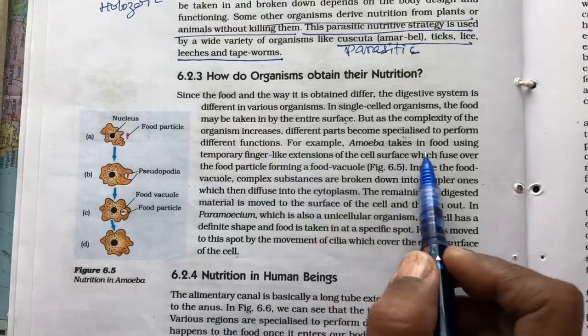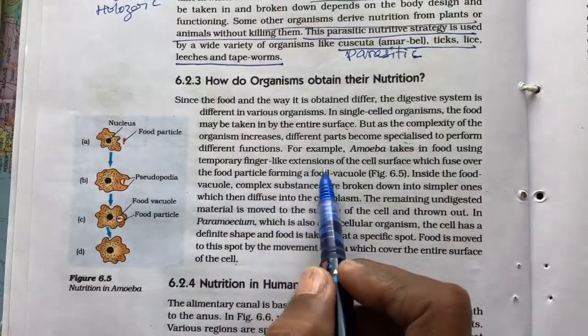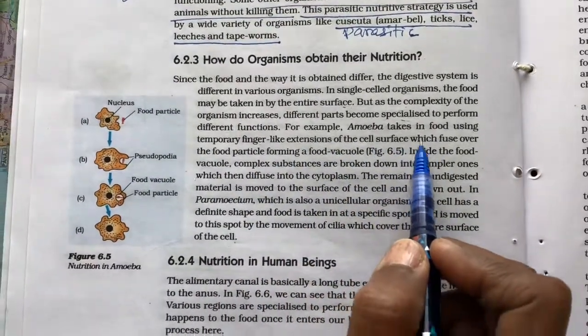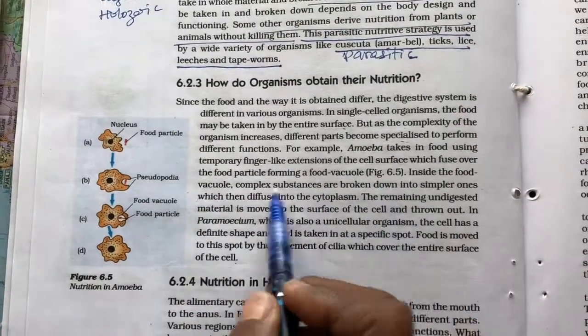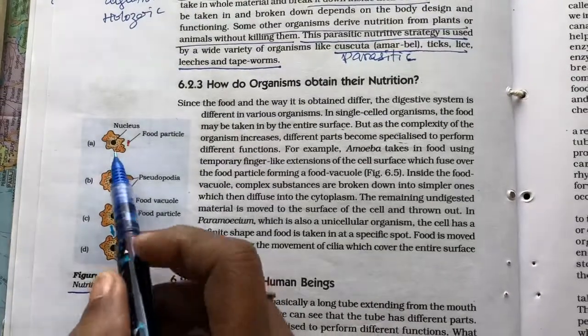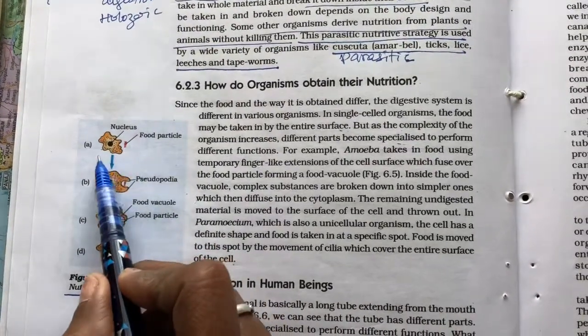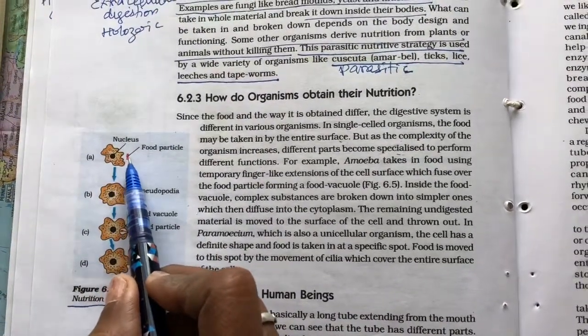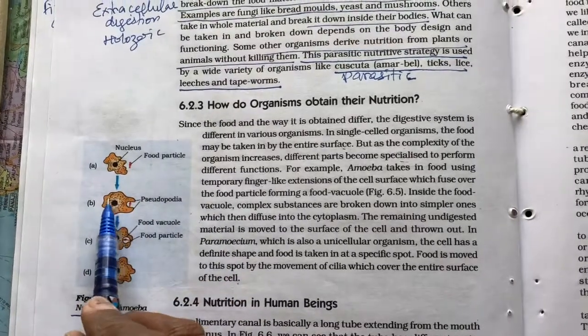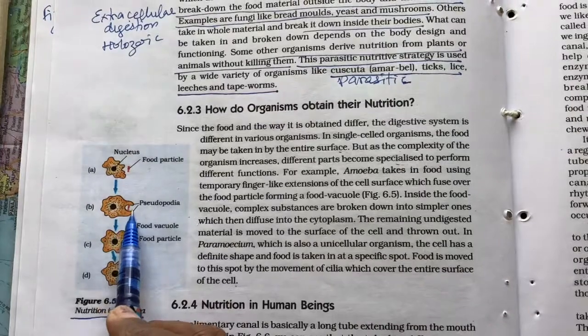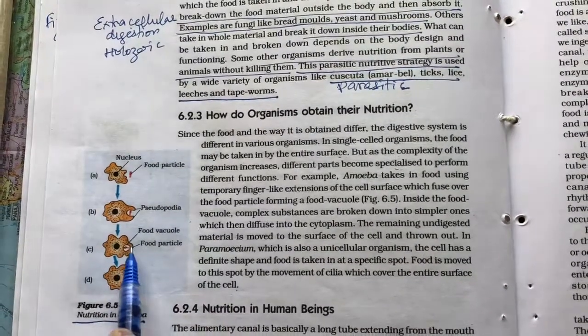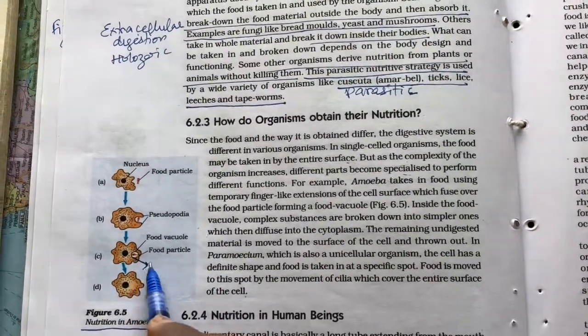For example, amoeba takes in food using temporary finger-like extensions of the cell surface which fuse over the food particle forming a food vacuole as in this diagram. What is being shown here is that amoeba, when it senses food particle somewhere nearby, it increases the cell membrane, pushes the cell membrane towards that food and encloses it. And this in the future becomes the food vacuole.